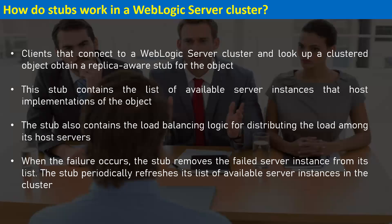If any managed server goes down — say one of four servers fails — the stub gets updated with the current number of running servers so it doesn't route requests to the failed server. Whenever a failure occurs, the stub removes the failed server instance from its list. The stub periodically refreshes its list of available server instances in the cluster automatically within a few seconds or milliseconds.